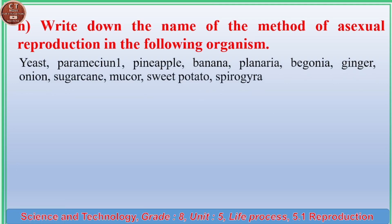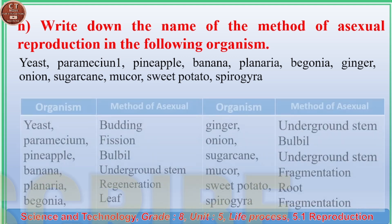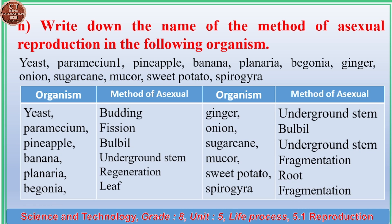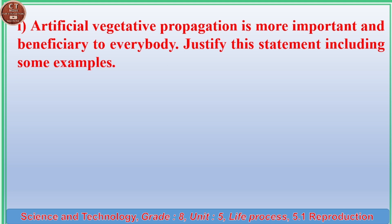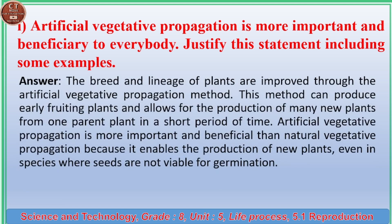(h) Write down the name of the method of asexual reproduction in the following organisms. (i) Artificial vegetative propagation is more important and beneficial to everybody — justify this statement with examples. Answer: The breed and lineage of plants are improved through artificial vegetative propagation. This method can produce early-fruiting plants and allows many new plants to be grown from one parent in a short period. It is more beneficial than natural vegetative propagation because it enables production of new plants even in species where seeds are not viable for germination.